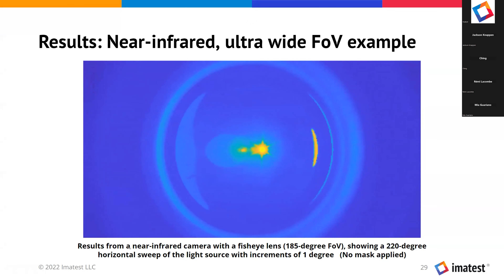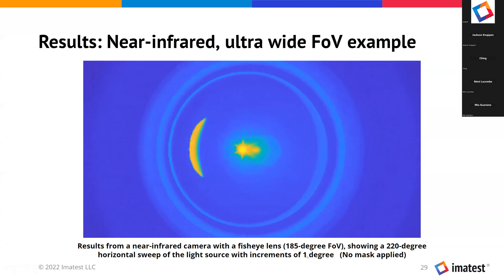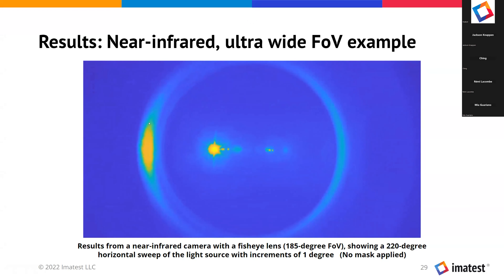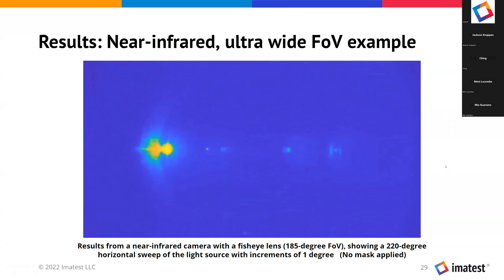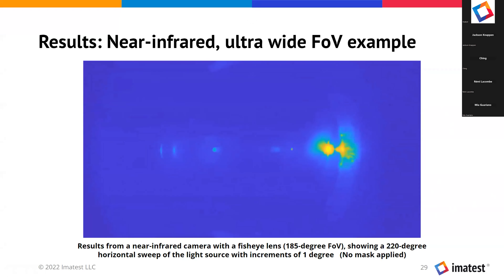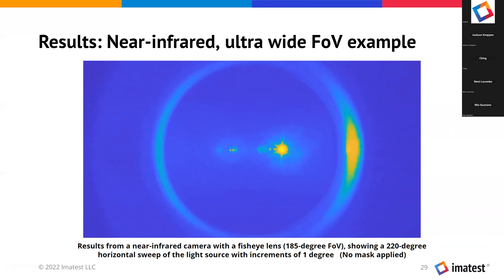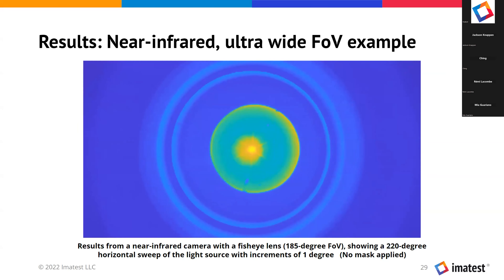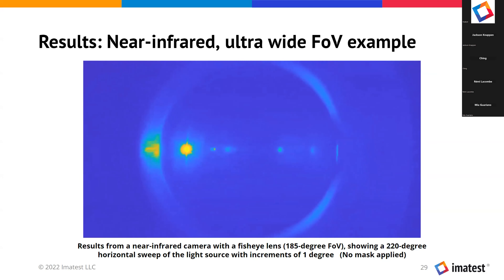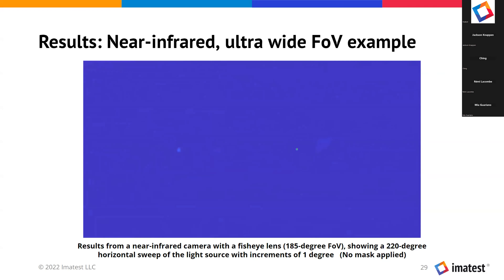This shows a 220-degree horizontal sweep of the light source with increments of one degree. The light source isn't masked out in these images, but you can see a lot of interesting artifacts occurring in and outside the image circle. 这是一个185度的超广角鱼眼相机，而且是在一个220度的水平光源移动所拍摄的。我们已经把光源本身遮盖，但是我们可以看到在它的周围有非常多很有趣的光晕或者是杂光。